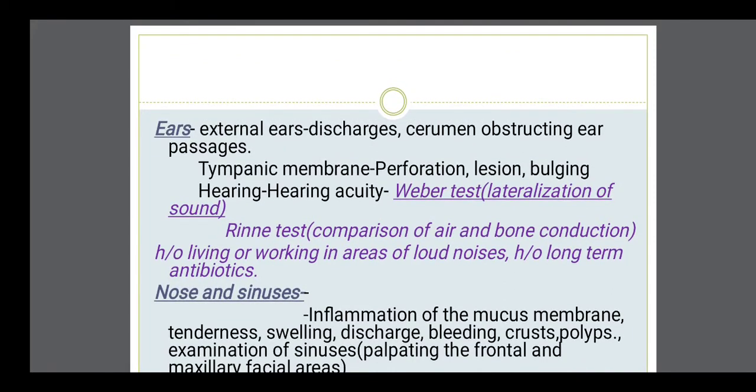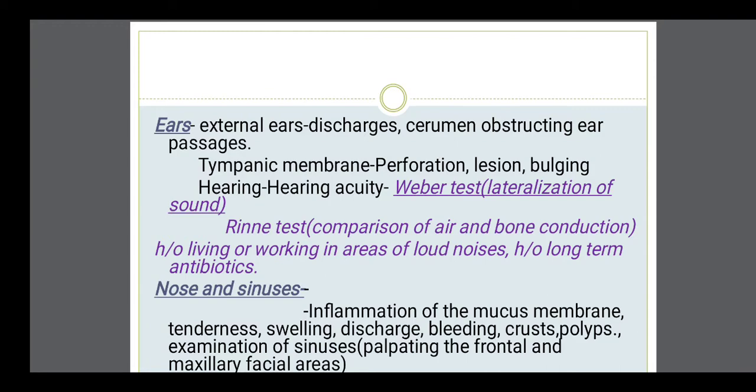Then next we have to examine the ear. First we have to examine the external ear — see for discharges or cerumen and whether it is obstructing the ear passage, and whether there is perforation of the tympanic membrane. Normally these examinations are done by the ENT expert. And for hearing acuity, there are two tests done with the help of a tuning fork: the Weber test and the Rinne test. These compare air and bone conduction and help us distinguish whether the person has conductive hearing loss or sensorineural hearing loss.